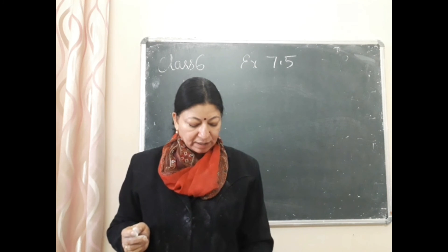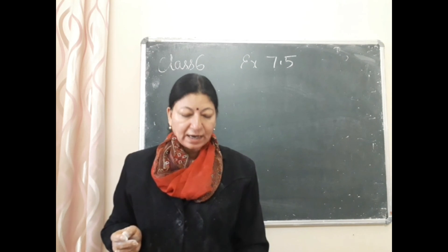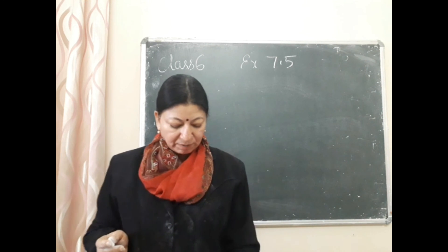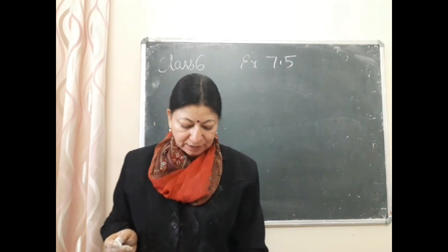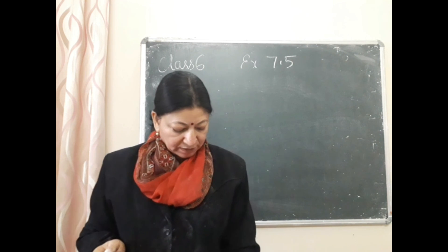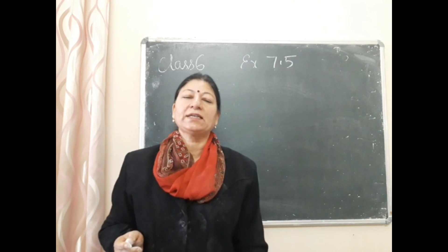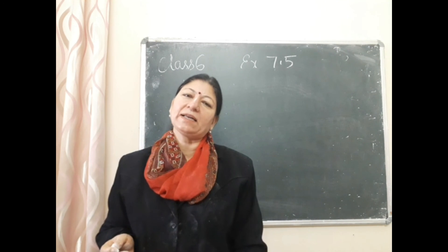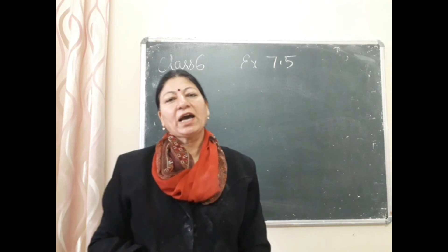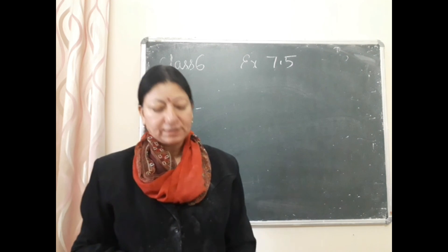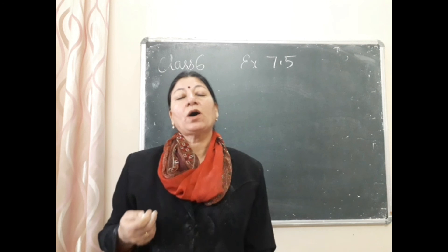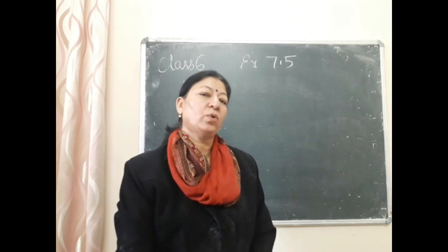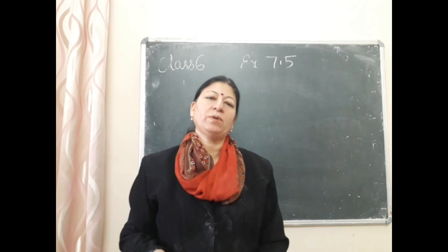Question number 5: The weight of 3 empty boxes are 17 3/4 kg, 5 1/2 kg, and 9 1/5 kg — what is the total weight? तीनों boxes के weight अलग-अलग दिये हैं, total बताना है — we have to add all 3 numbers. तो student, do this exercise in your notebook. Have a nice day, goodbye!